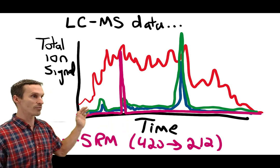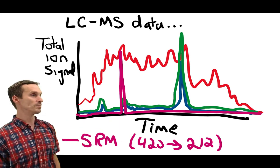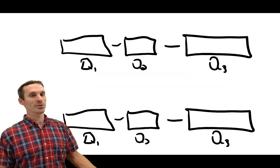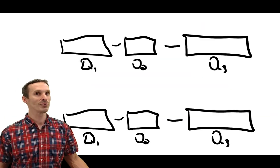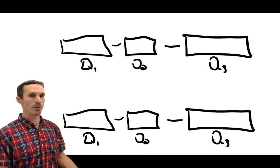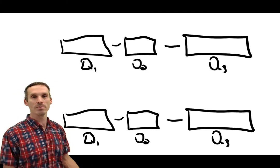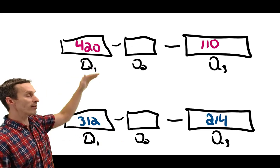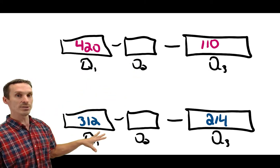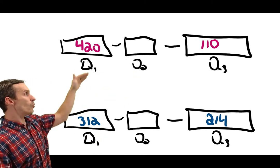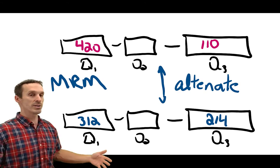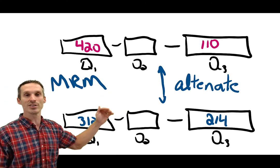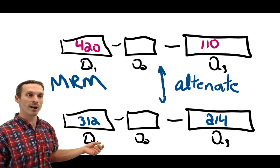This is what we would call selected reaction monitoring, and we always label it with the parent mass and the product mass. So this 420 to 212, we call that an MS-MS transition. Finally, of course, if we can do it with one mass, we could do it with others. Quadrupoles and triple quadrupoles operate extremely quickly. If I was interested in both compounds, I could select different masses in all instances, and what I can do is just quickly oscillate between top and bottom. You could do this every second—you could do 10 different transitions every second.